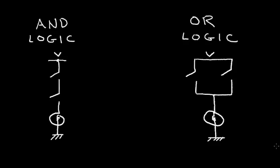In this video, I want to introduce the CMOS NAND gate and the CMOS NOR gate, but let's first review some simple logic. Let's review AND logic and OR logic. At the left, I have a voltage V, and I have a switch that I'll call switch A, and I have a switch B, and I have a light bulb. And if this voltage V is attached to the light bulb, it'll light up.